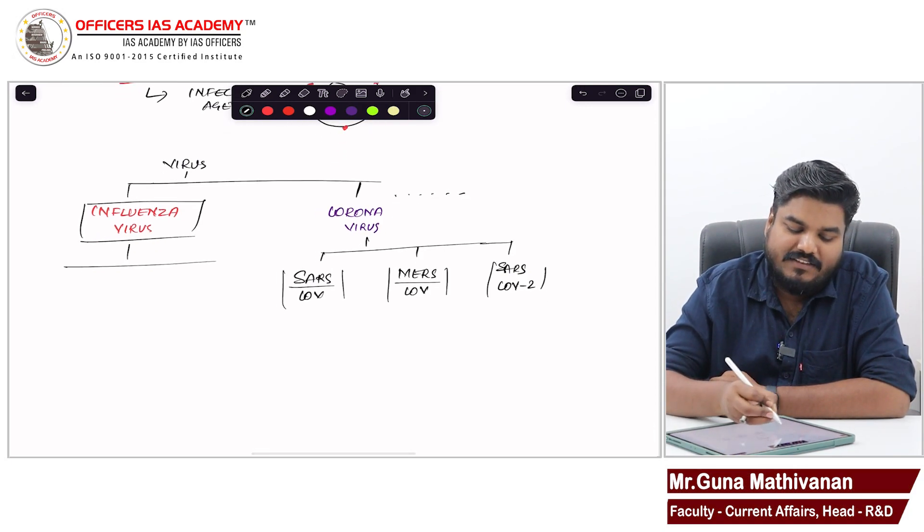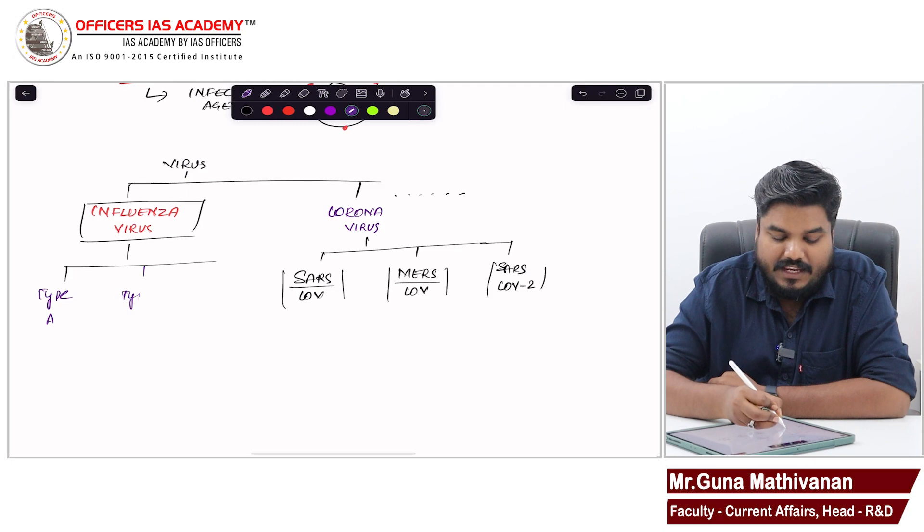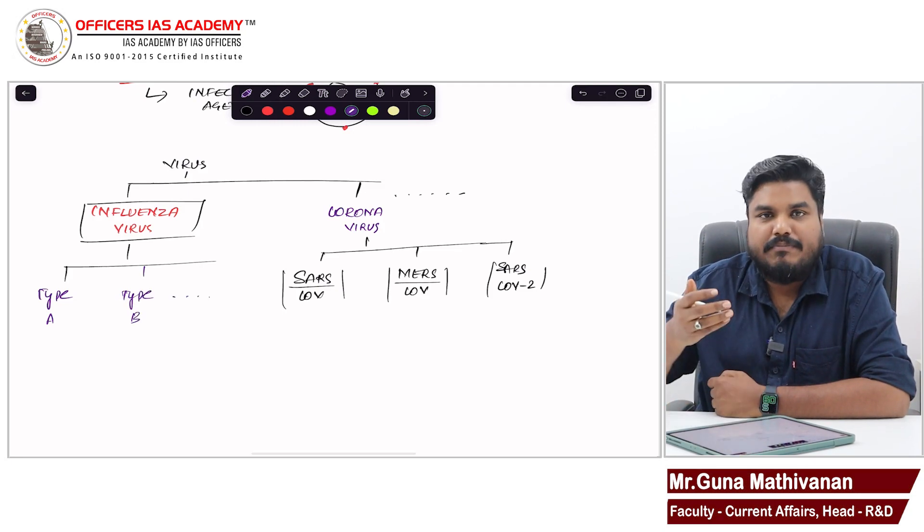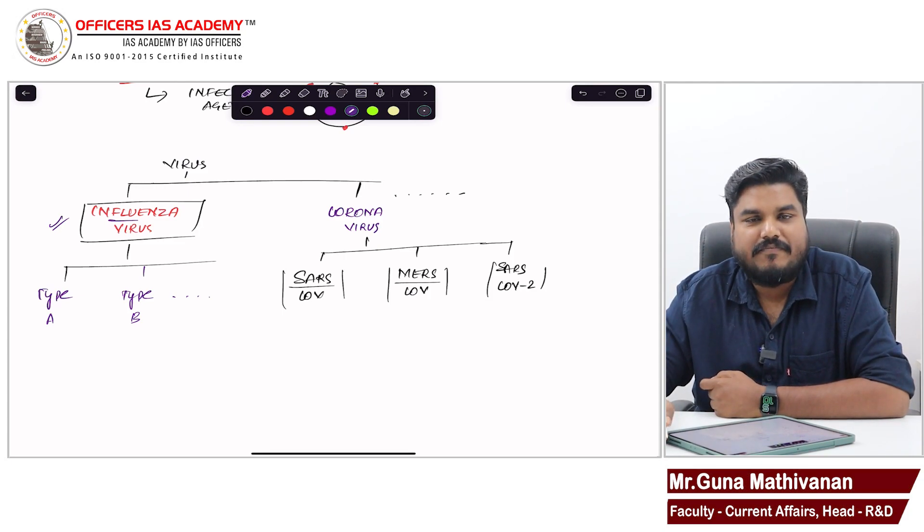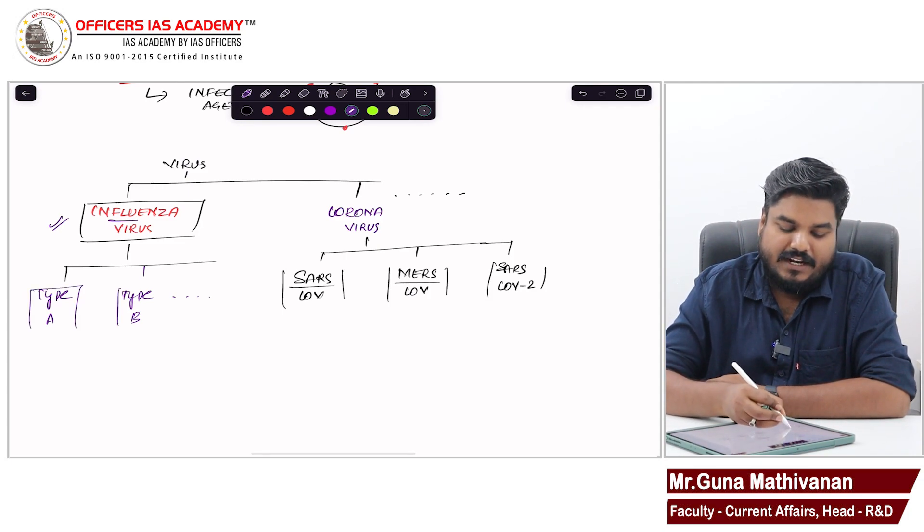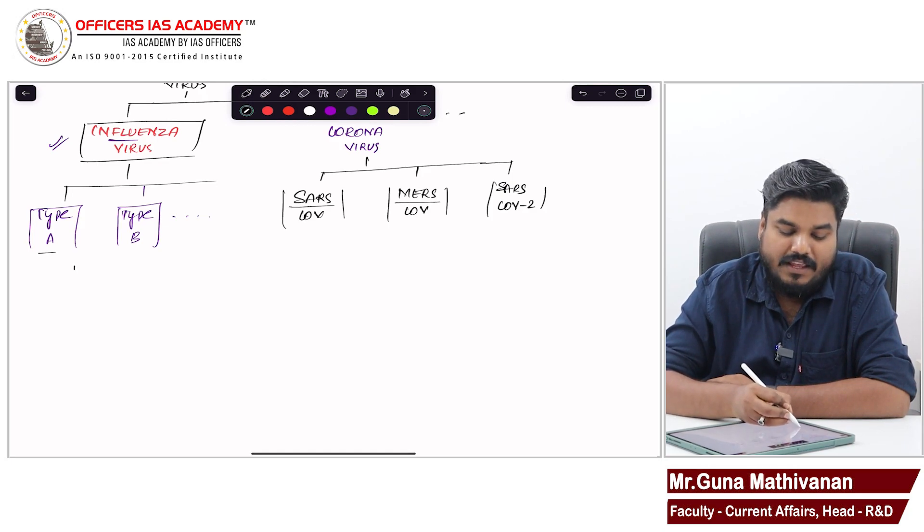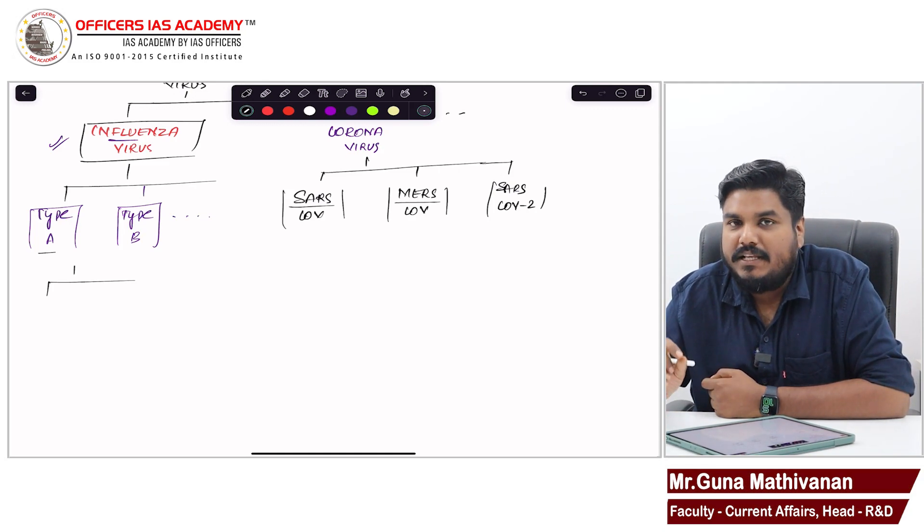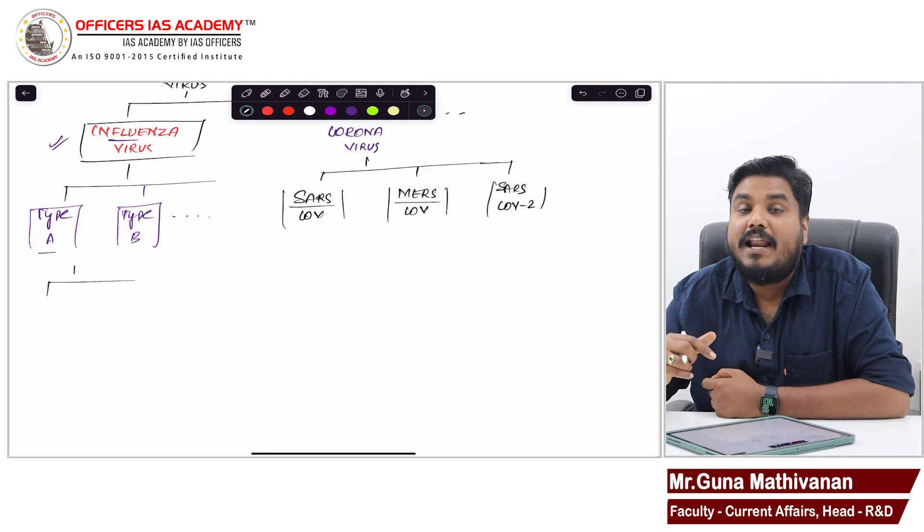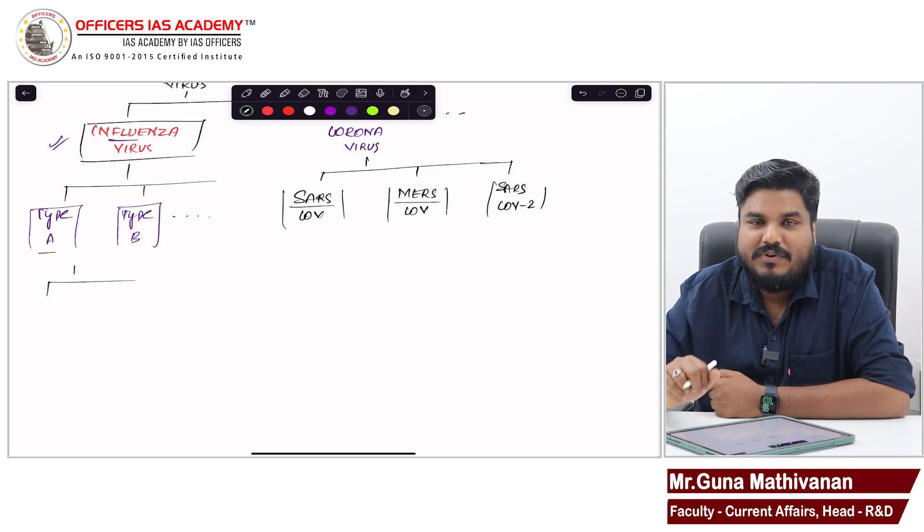This influenza virus can be further divided into type A influenza virus, type B influenza virus, type C, and it goes on. Influenza virus got its name because it causes flu-like diseases. This type A virus can be further divided into different types based on the type of protein layer found in that virus.